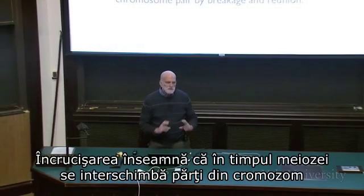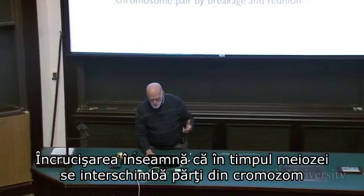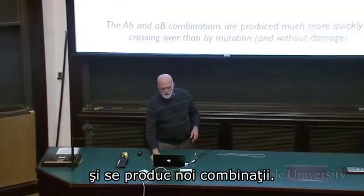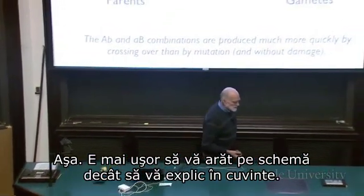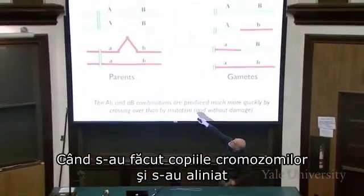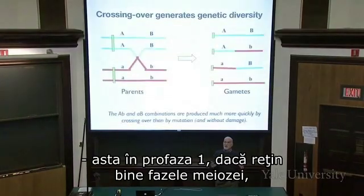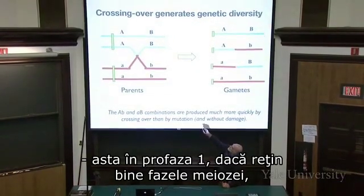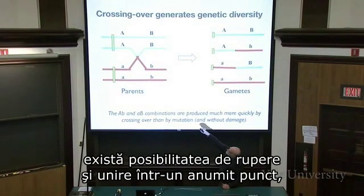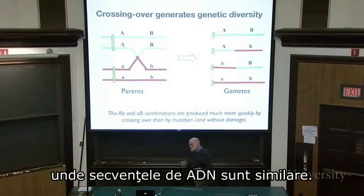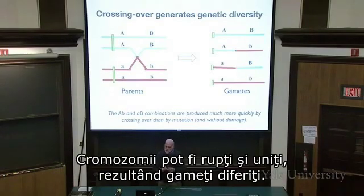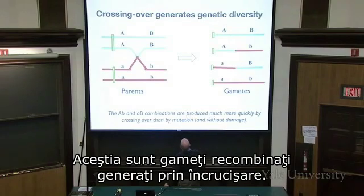Crossing over means chromosome parts are exchanged during meiosis, producing new combinations. It's easiest to show with a diagram: when chromosome copies are lined up in prophase I of meiosis, a break and then rejoining can occur at a certain spot where DNA sequences are very similar. The chromosomes break and rejoin, and the product is gametes that are different — recombinant gametes generated by crossing over.